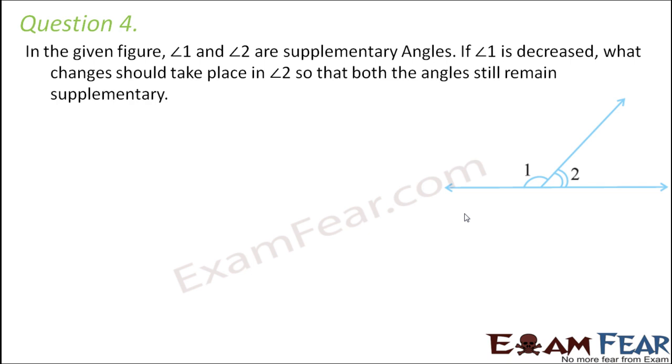Question 4: In the given figure, angle 1 and angle 2 are supplementary angles. If angle 1 is decreased, what changes should take place in angle 2 so that both angles still remain supplementary? To remain supplementary, the only condition is that the sum of angle 1 and angle 2 must be 180 degrees. That is the only criterion for two angles to be supplementary. We have to ensure that angle 1 plus angle 2 equals 180 degrees.